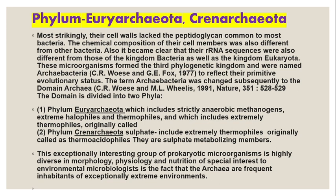Domain Archaea is divided into two phyla: Euryarchaeota and Crenarchaeota. Euryarchaeota includes strictly anaerobic methanogens, halophiles, and thermophiles. Crenarchaeota includes thermophiles — originally called thermoacidophiles — and their sulfate-metabolizing members. So Domain Archaea is divided into these two phyla.